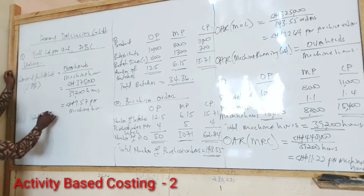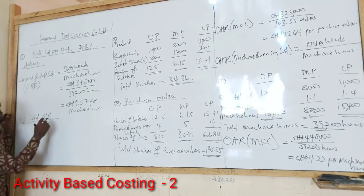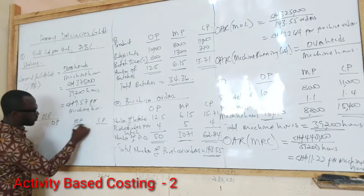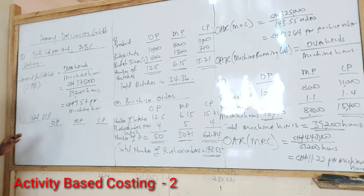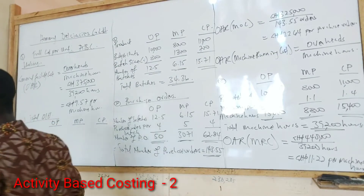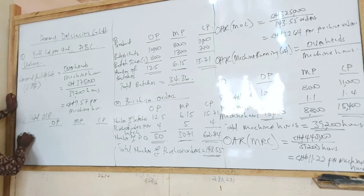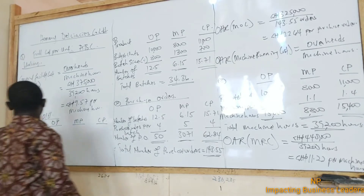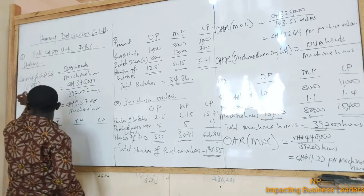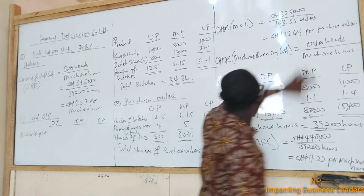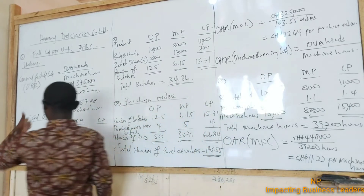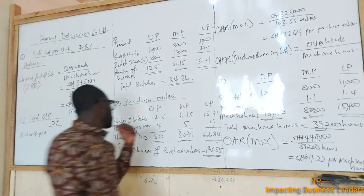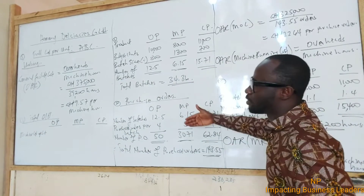So Step I was calculating the overhead absorption rates, and Step II is to calculate the total overheads. So look at how we go about it: OP, MP, CP. The first cost item is machine setup cost. Step II is to calculate the overheads — now you have a couple into it.